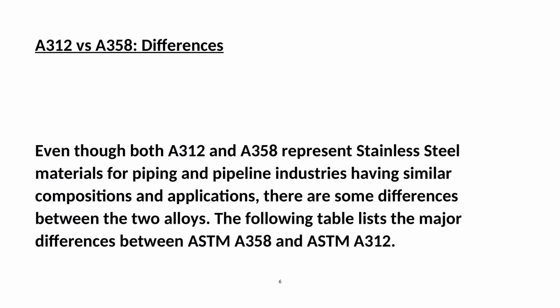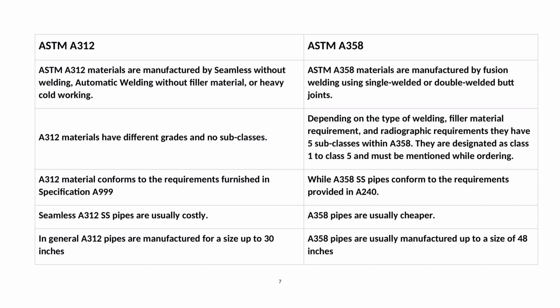A312 vs A358 differences. Even though both A312 and A358 represent stainless steel materials for piping and pipeline industries having similar compositions and applications, there are some differences between the two alloys. The following table lists the major differences. ASTM A312 materials are manufactured by seamless process without welding, automatic welding without filler material, or heavy cold working. ASTM A358 materials are manufactured by fusion welding using single welded or double welded butt joints.